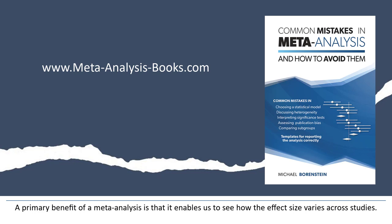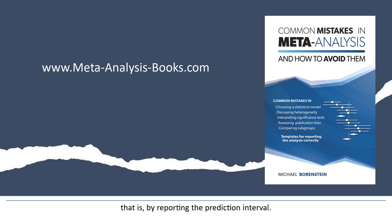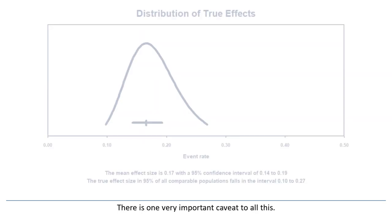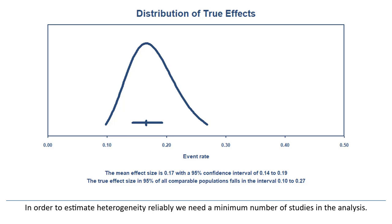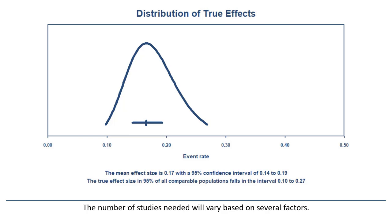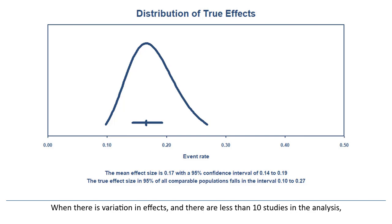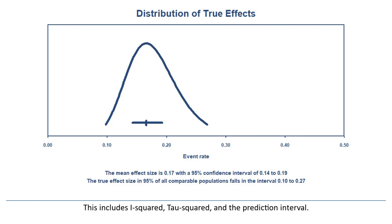A primary benefit of a meta-analysis is that it enables us to see how the effect size varies across studies. We should always report this information in a way that is clear and informative — that is, by reporting the prediction interval. There is one very important caveat: in order to estimate heterogeneity reliably, we need a minimum number of studies. We might use 10 as a useful minimum. When there is variation in effects and there are fewer than 10 studies, we cannot have confidence that any statistics related to heterogeneity — including I-squared, tau-squared, and the prediction interval — will be reliable.